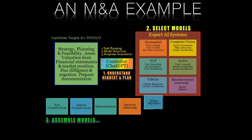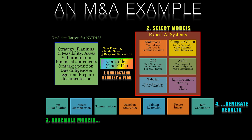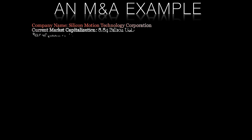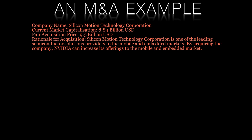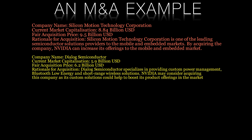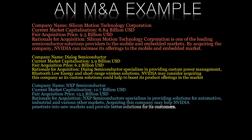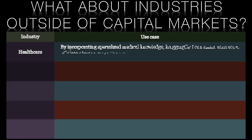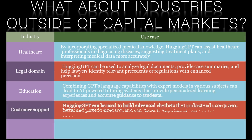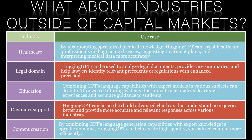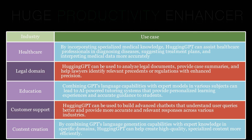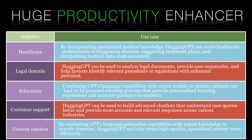HuggingGPT's potential to generate valuable insights and recommendations has significant implications for various industries. In this specific example, the generated response can help bankers, lawyers, investors, analysts, and other stakeholders in capital markets to understand potential strategic moves by firms and their potential impact on an industry. Knowledge workers in many different industries outside of capital markets can benefit from HuggingGPT's ability to access and process a wealth of information, analyse data, and generate insights that can streamline decision-making and improve the accuracy and efficiency of problem solving across different domains. Used effectively, this technology is a huge productivity enhancer for your business.